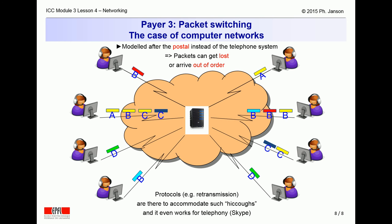For that to work, every packet, mail or parcel, needs to carry a destination address, which we already know they do from our protocol discussion. As suggested by this drawing, a packet in black may be delivered to C out of order, after another packet in yellow that was sent before the black one. It is even possible that a packet, mail or parcel, may be completely lost, as happens occasionally in postal systems.